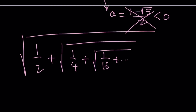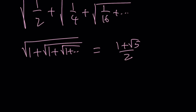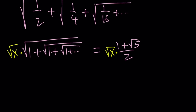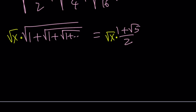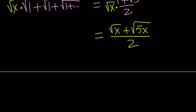By using our expression, we're going to develop a general form. This infinite radical of 1s converges to 1 plus root 5 over 2. Now we're going to multiply both sides of this expression by the square root of x. On the right-hand side, distributing gives us the square root of x plus the square root of 5x divided by 2. On the left-hand side, putting this inside the radical — since it's also a square root — we multiply x by 1, giving the square root of x, but bringing another x in front of the gigantic radical.